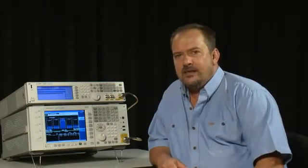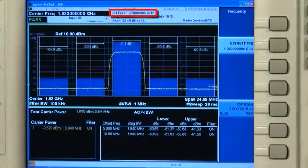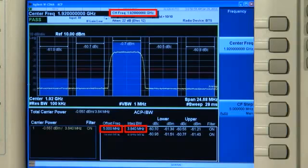Agilent's PowerSuite automates this complicated measurement very effectively. We just set the channel frequency, the channel bandwidth, and the channel spacing. The ACP measurement does everything else.